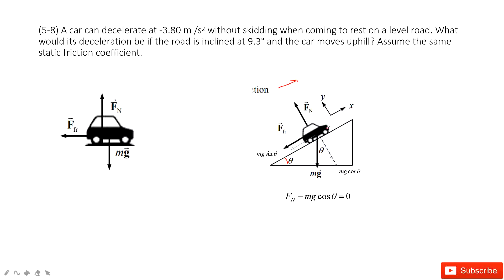So first of all, I do the y-component. We have f minus mg cos theta equals zero. And then look at x-component. We can see these two forces, friction and mg sin theta, pointing to the negative x-component. So we have negative friction minus mg sin theta equals mass times acceleration.